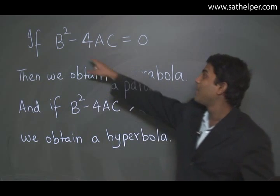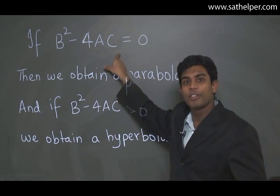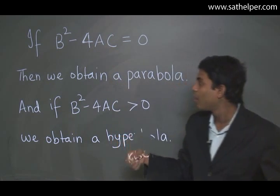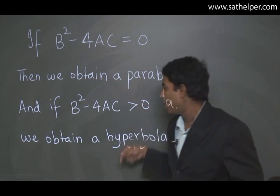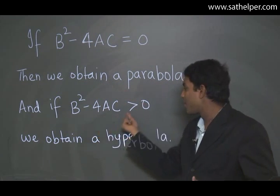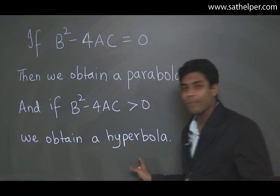In particular, if B² minus 4AC is strictly equal to 0, the value is equal to 0, then what we get is a parabola. And if this value was strictly greater than 0, then what you get is a hyperbola.